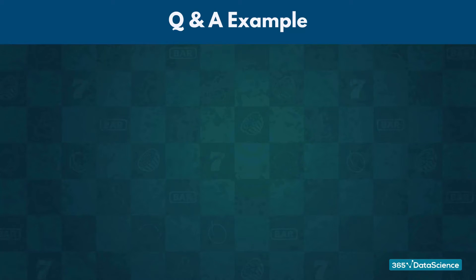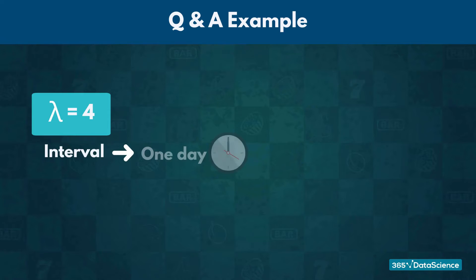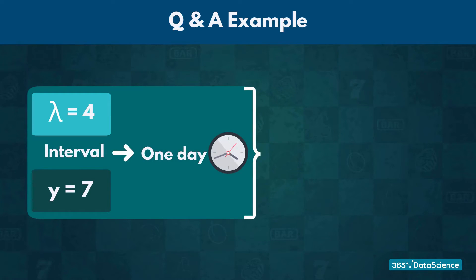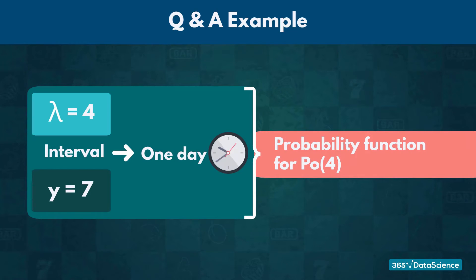In this example, the average number of questions you anticipate is 4, so lambda equals 4. The time interval is one entire workday, and the singular instance you are interested in is 7. Therefore, Y is 7. To answer this question, we need to explore the probability function for this type of distribution.